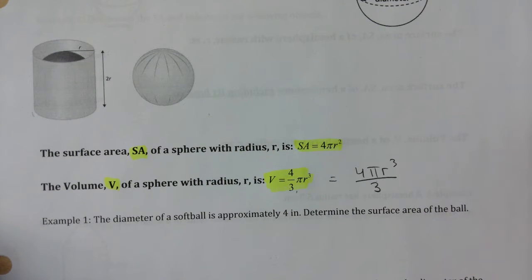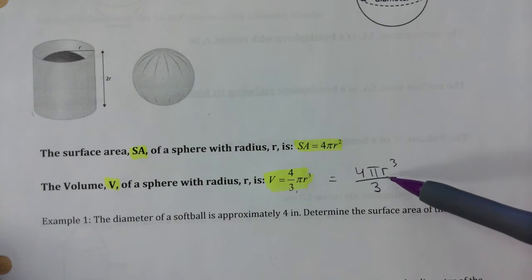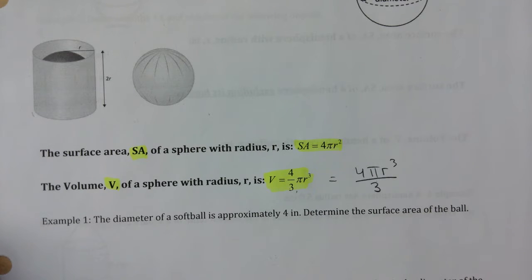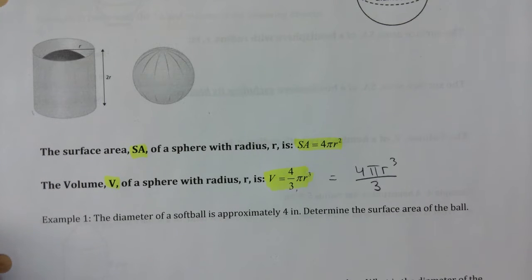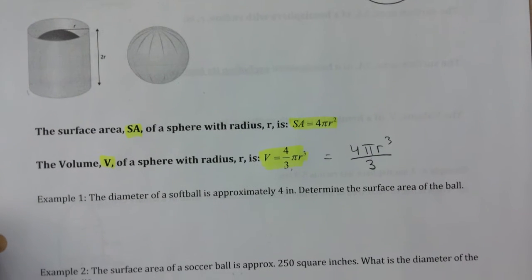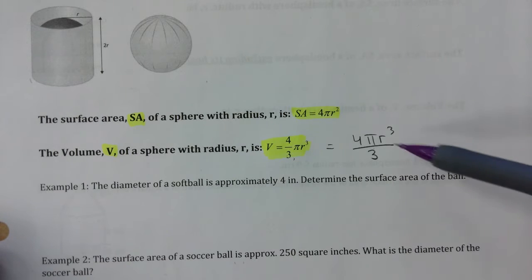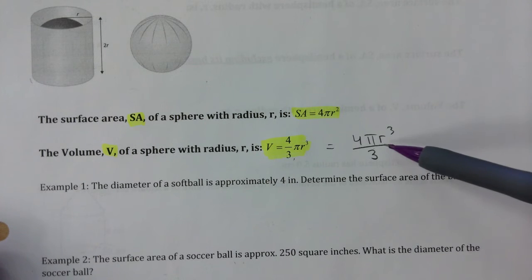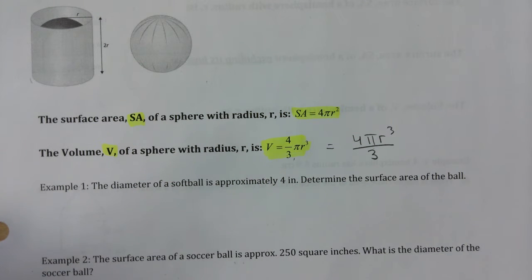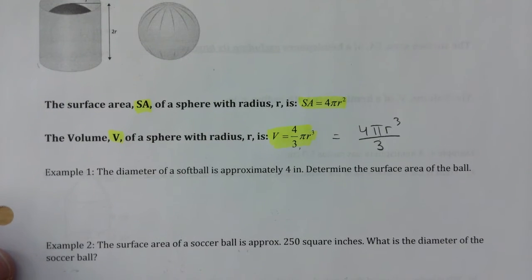Because surface area and volume of a sphere have only radius as a variable, it's a perfect formula to work backwards with — that's why we use it quite a bit. We'll give you the volume and ask you to find the radius. Watch out: radius is cubed, so this is different — we're going to have to take the cube root at some point.